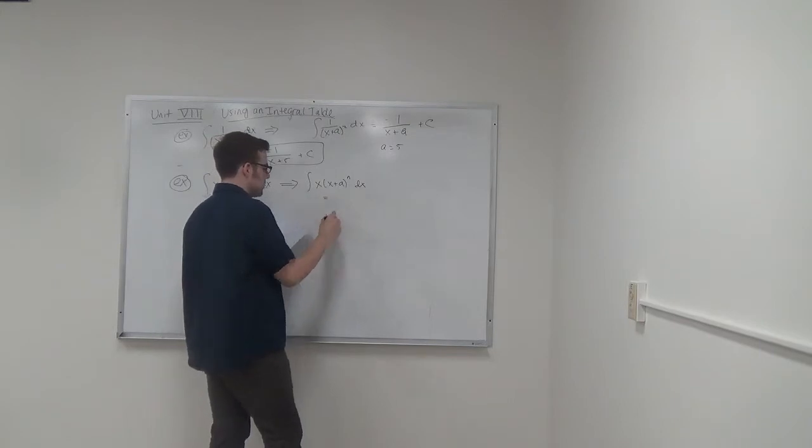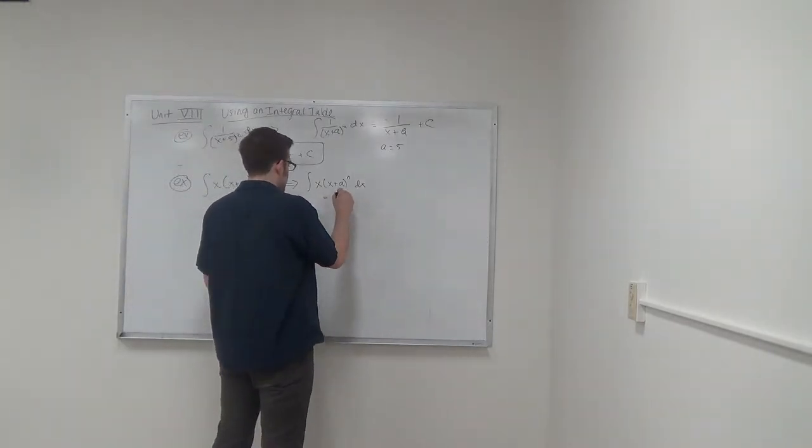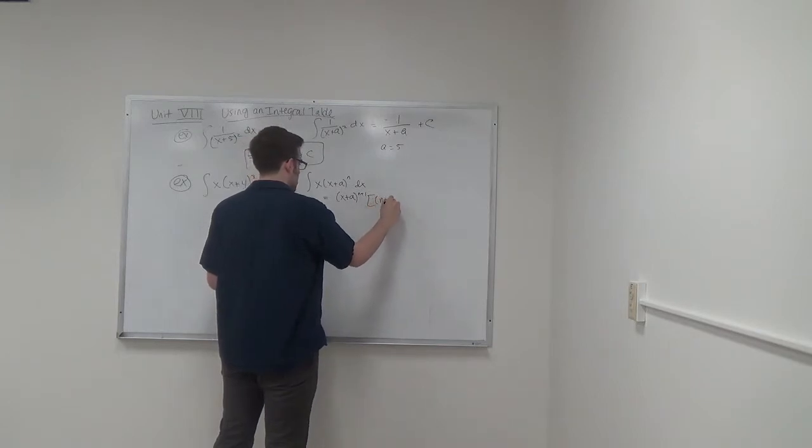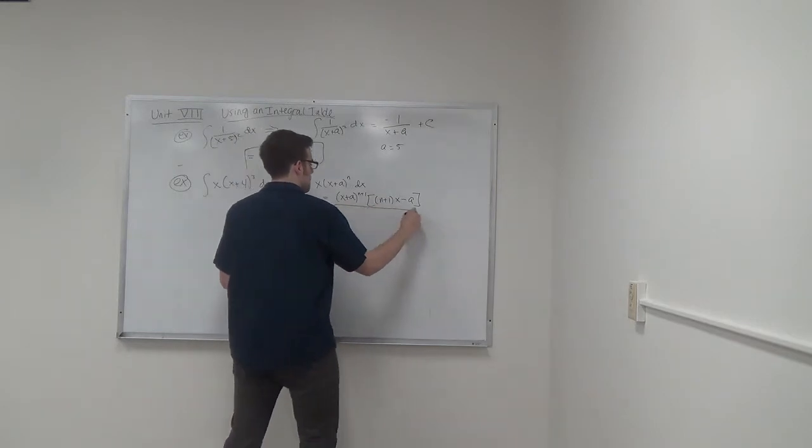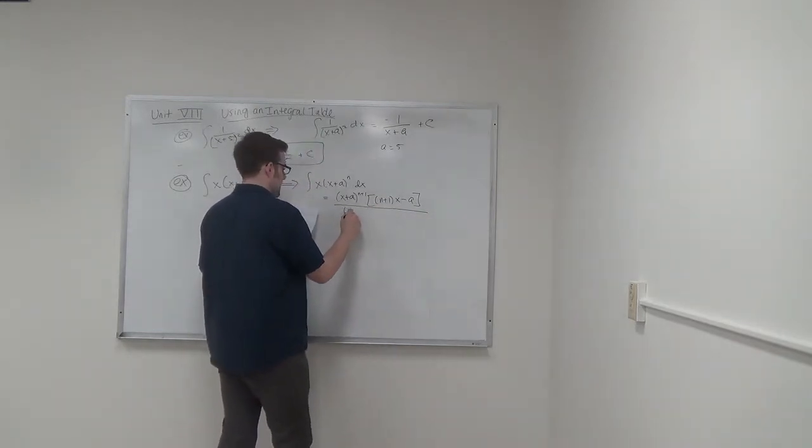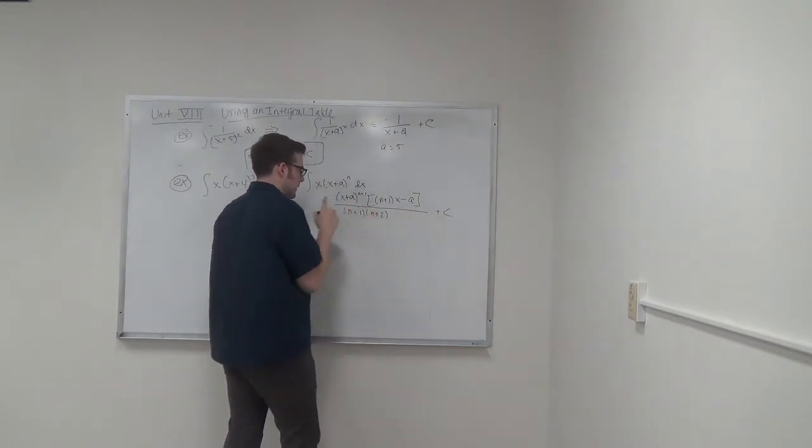This one is a somewhat long expression, so I'm just going to bring it down to the next line. The integral is equal to x plus a to the n plus 1 times n plus 1 with x minus a over n plus 1 times n plus 2 plus c.